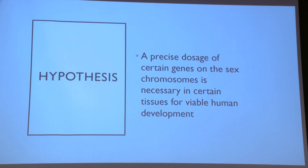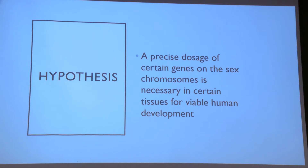That brings me to my hypothesis. I hypothesize that a precise dosage of certain genes on the sex chromosomes is necessary for certain tissues for viable human development. Essentially, what this means is that mosaicism is the deal for every Turner Syndrome patient — complete 45X Turner Syndrome really can't exist — because we predicted that some tissues are going to require two sex chromosomes.